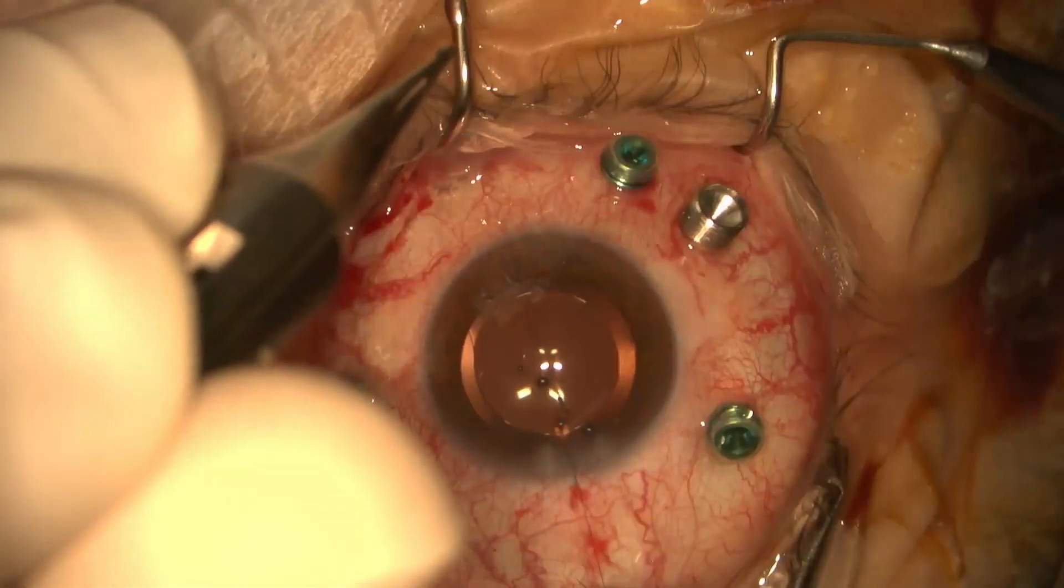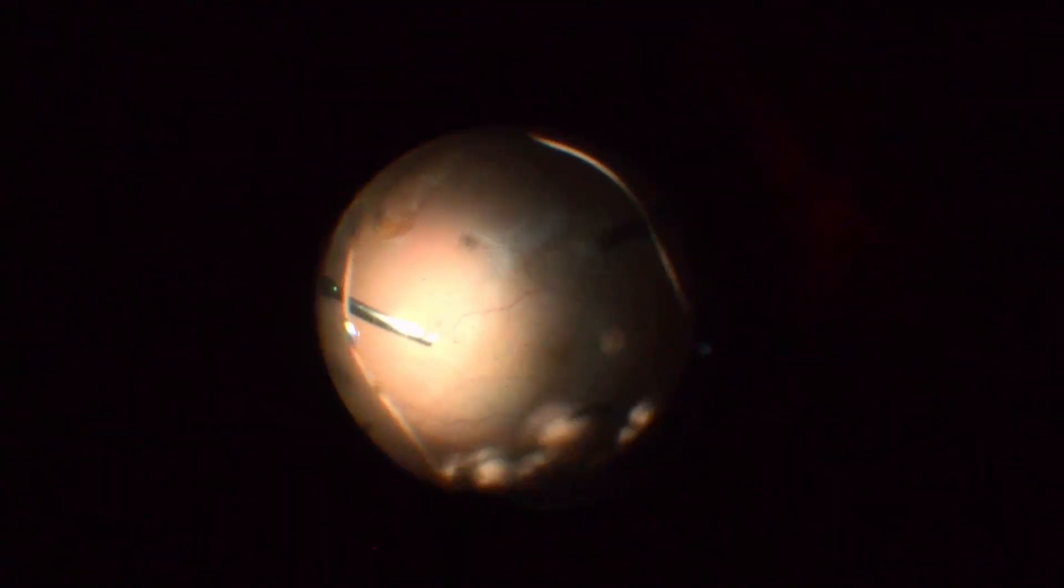The surgery begins with a routine facoemulsification with IOL implantation in the bag. We proceed then with a core and peripheral vitrectomy.